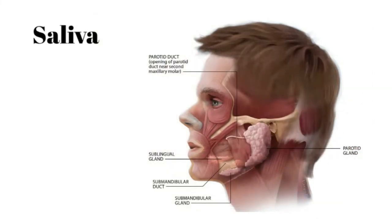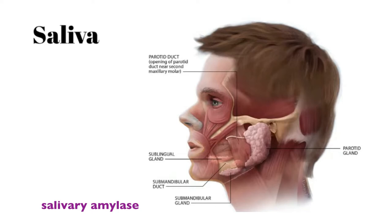Let's talk about saliva. Digestion is both the mechanical breakdown of food — achieved initially via the teeth in the mouth — and a chemical breakdown. Saliva has enzymes that help initiate chemical breakdown, such as salivary amylase, which breaks down carbohydrates specifically starches, and it also releases salivary lipase, which helps break down fats.